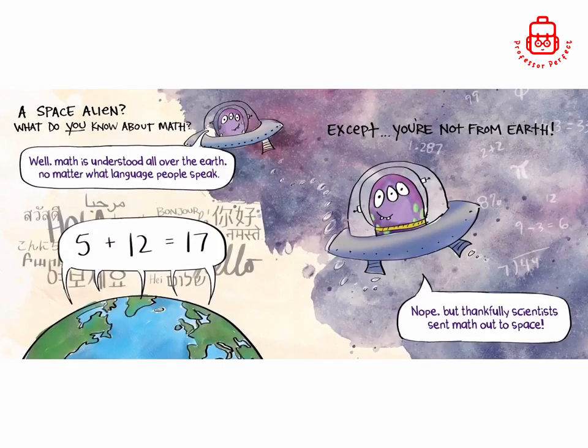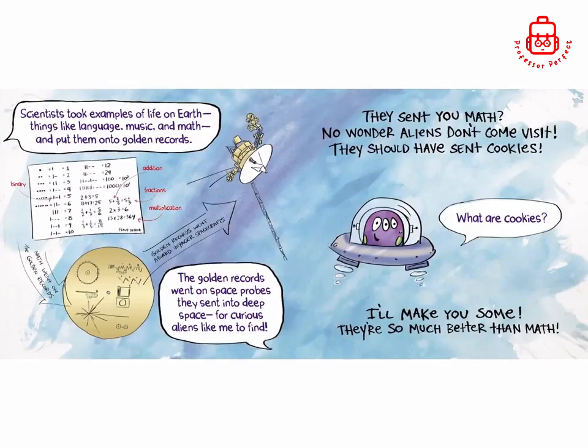A space alien! What do you know about math? Well, math is understood all over the earth no matter what language people speak. 5 plus 12 equals 17. Except you're not from earth. Nope, but thankfully scientists send math out to space. Scientists took examples of life on earth, things like language, music, and math, and put them onto golden records: binary addition, fractions, multiplication. The golden records went on space probes they sent into deep space for curious aliens like me to find.